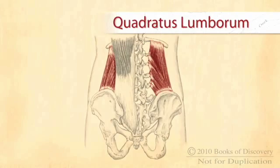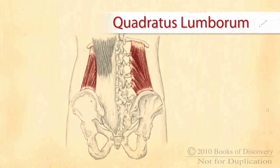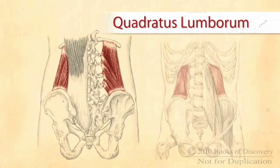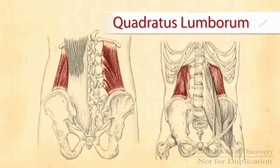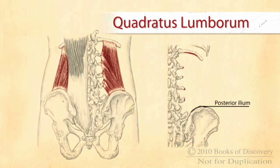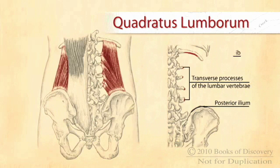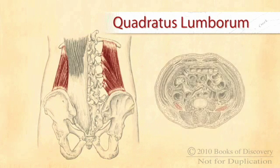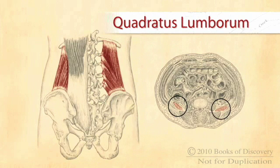Although it would seem to be the deepest muscle of the low back, the quadratus lumborum is strangely enough the deepest muscle of the abdomen. Stretching from the posterior ilium to the transverse processes of the lumbar vertebrae and twelfth rib, this squat muscle is simply an abdominal muscle located on the posterior surface of the thorax.